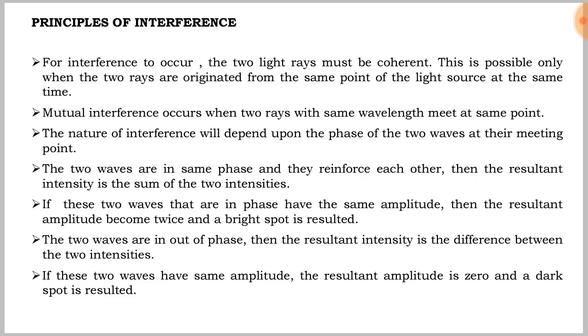The two waves are out of phase, then the resultant intensity is the difference between two intensities. If the two waves have same amplitude, the resultant amplitude is zero and a dark spot is resulted.